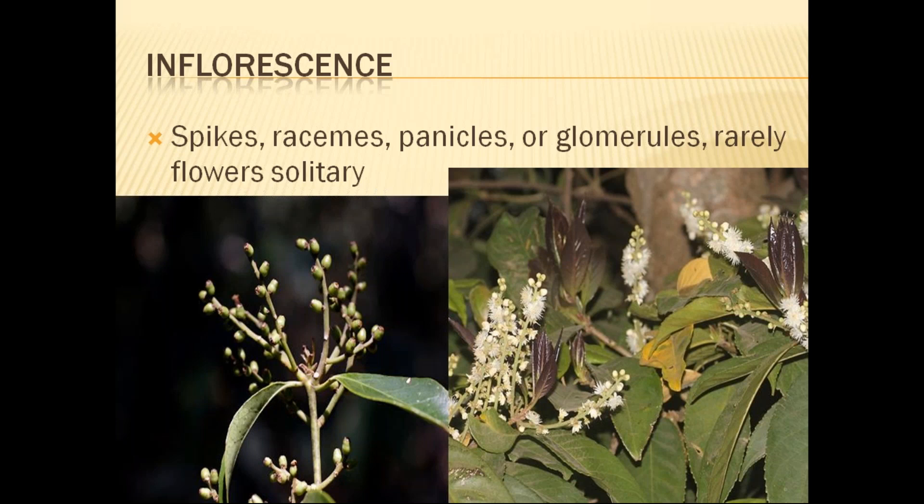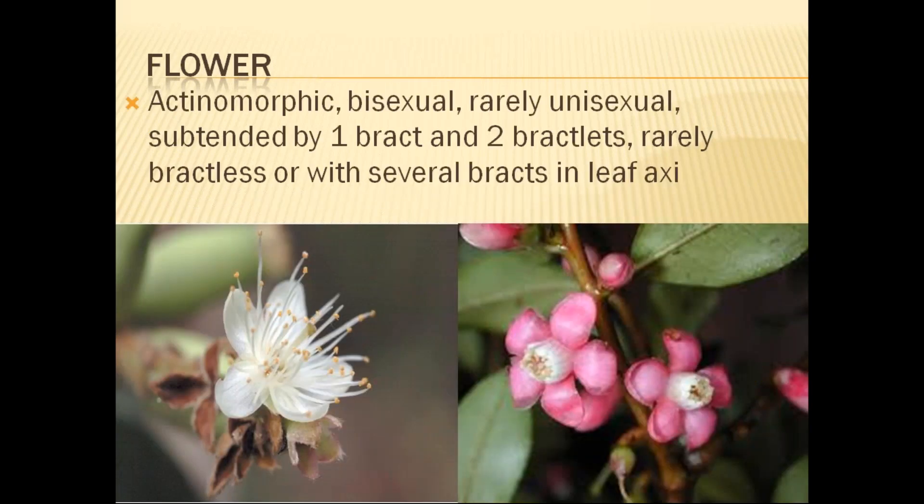The flowers are arranged on the inflorescence. Flowers in this family are generally white — that is a very important character. The flowers are actinomorphic and bisexual. They have one prominent bract and two bracteoles. Generally they have actinomorphic flowers with prominent bracts present, visible in the left side photographs where the bracts and bracteoles are clearly seen.